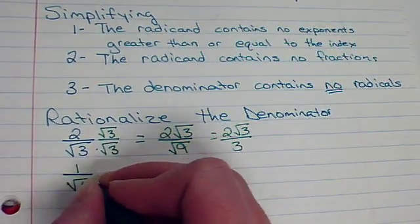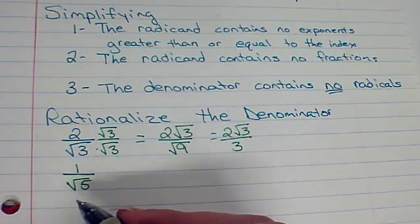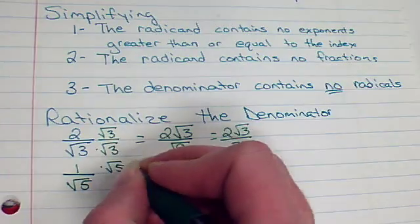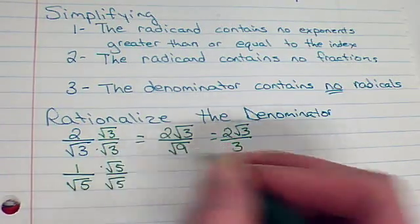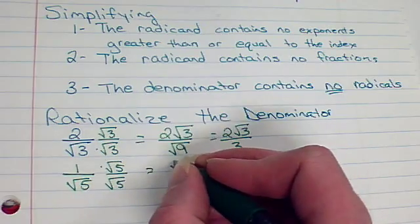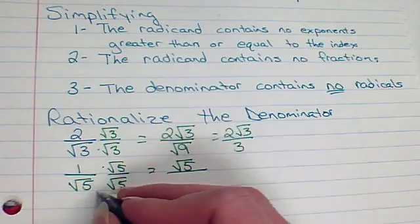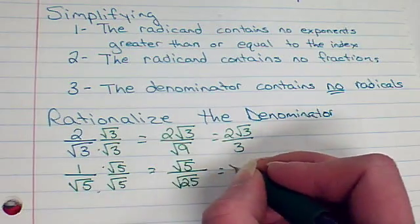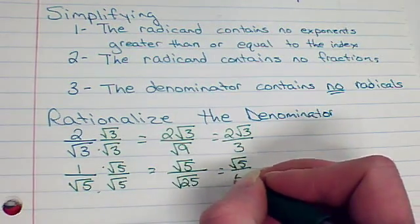Let's try another one. 1 over the square root of 5. Again, the square root. So, I want to multiply the top and the bottom by the square root of 5. So, square root of 5 over 5. 1 times the square root of 5 is going to give me the square root of 5. Square root of 5 times the square root of 5 is the square root of 25, which is just going to be 5.